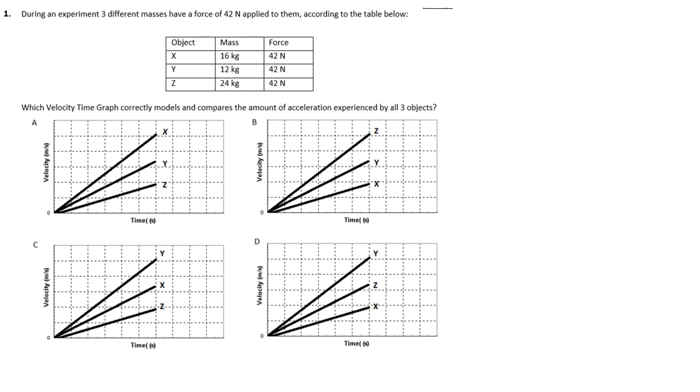During an experiment, three different masses have a force of 42 newtons applied to them. According to the table below, we can see objects x, y, and z here all have a mass of 15, 12, and 24 kg respectively.